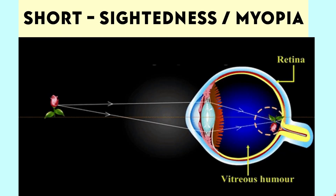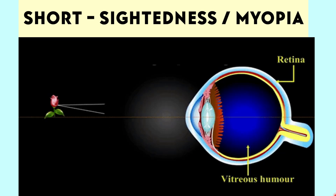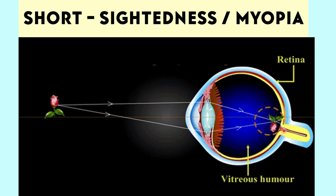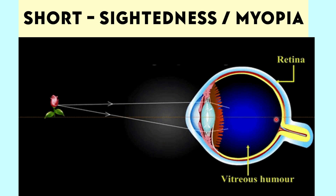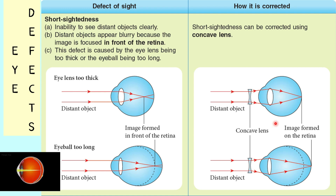The first defect of vision is short-sightedness, also known as myopia. As you can see here, the image of the rose is not focused exactly on the retina. The image is, however, focused in front of it. For a person with short-sightedness, he or she might be able to see nearer objects clearly. But unfortunately, distant objects are blurry.